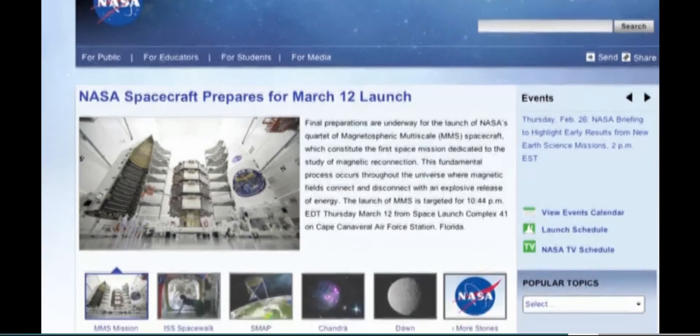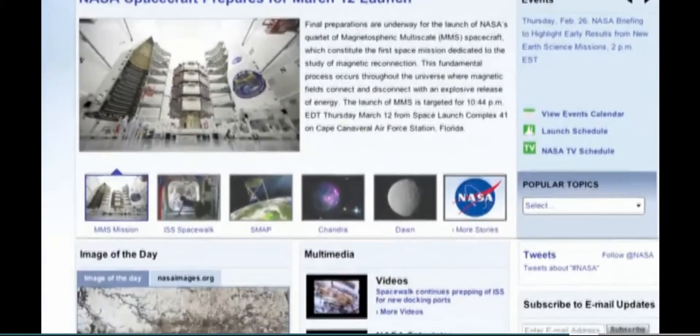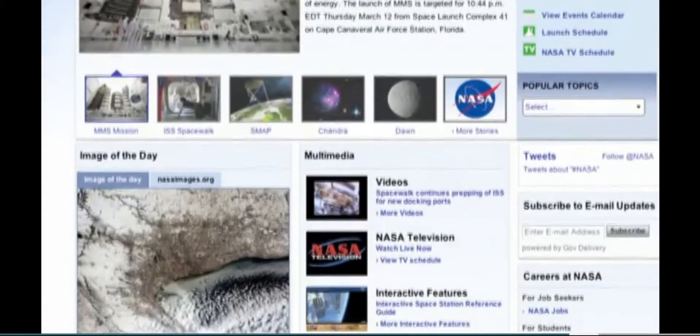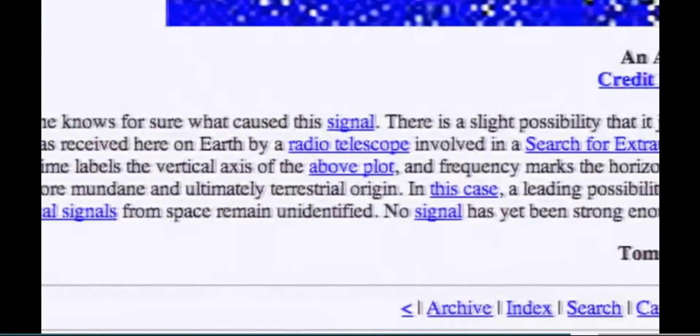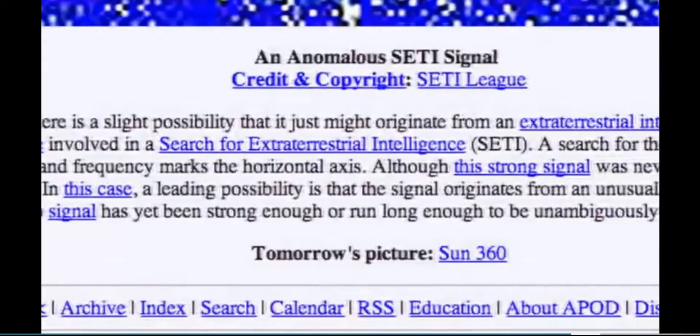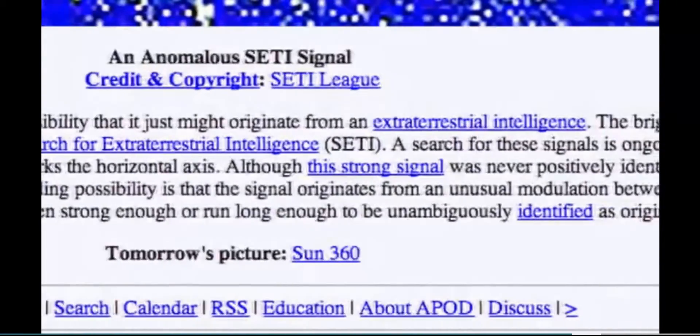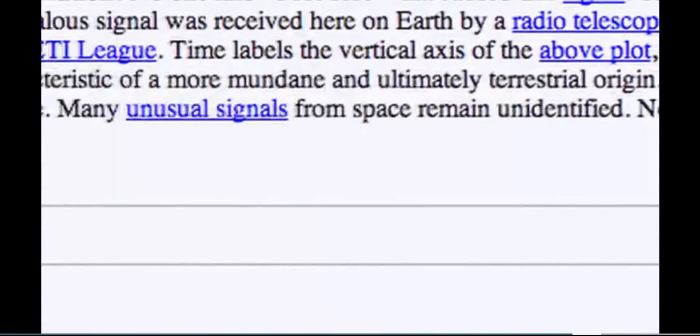On the NASA website, in the section Astronomy Picture of the Day, we found an explanation for the signal. No one knows for sure what caused this signal. There is a slight possibility that it just might originate from an extraterrestrial intelligence. Many unusual signals from space remain unidentified.